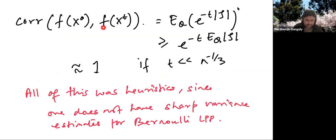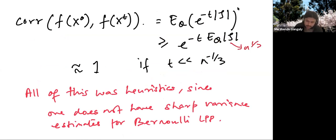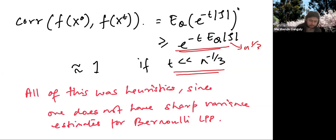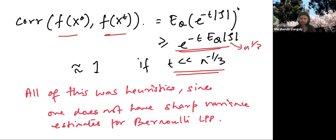So the correlation of f(X_0) * f(X_t) decays like E[e^{-t * |S|}], which by Jensen is at least e^{-t * E[|S|]} = e^{-t * N^{1/3}}. This means if T is much smaller than N^{-1/3}, this whole expression is very close to 1, so the correlation between the geodesic weight at time 0 and at time T is very close to 1. That's another way to see from Fourier analysis why N^{-1/3} is the right threshold. Of course all of this was heuristic since sharp variance estimates for Bernoulli LPP are not known, but this motivates how Fourier analysis could be used to arrive at the same conclusion.